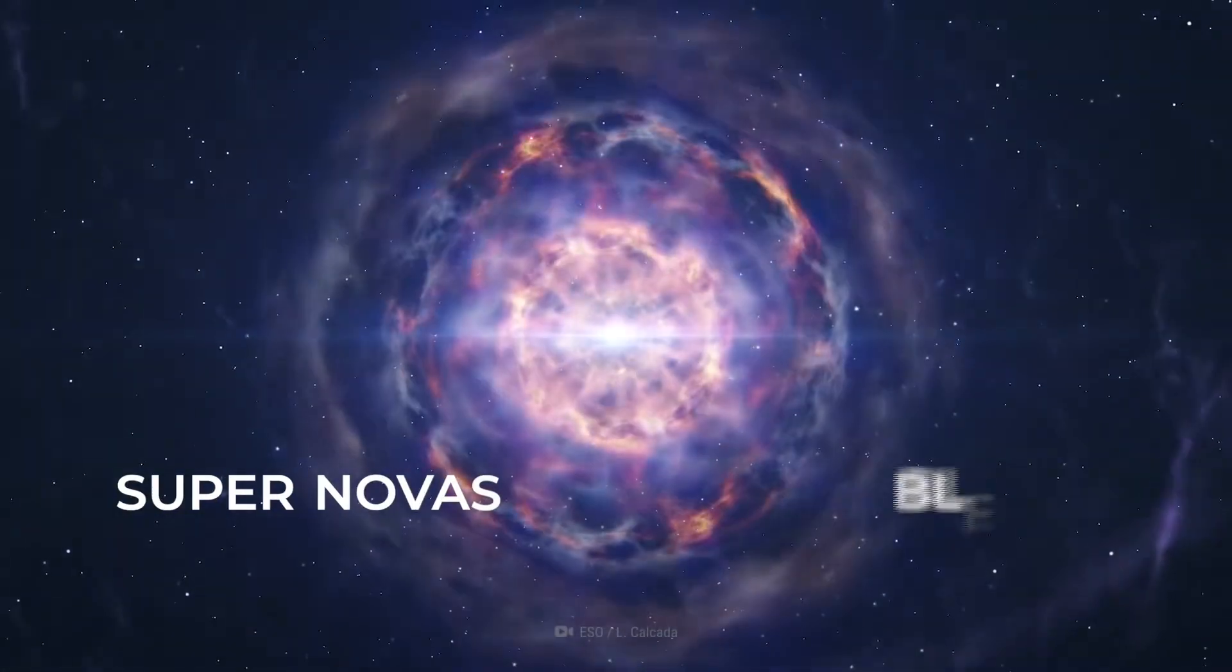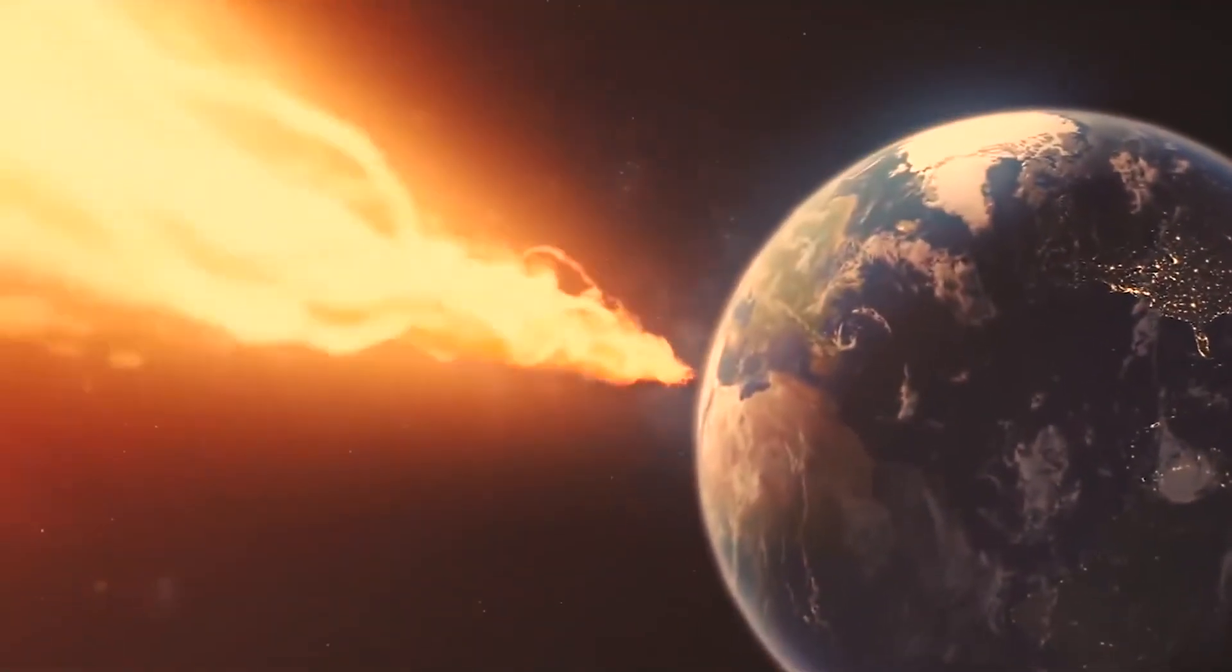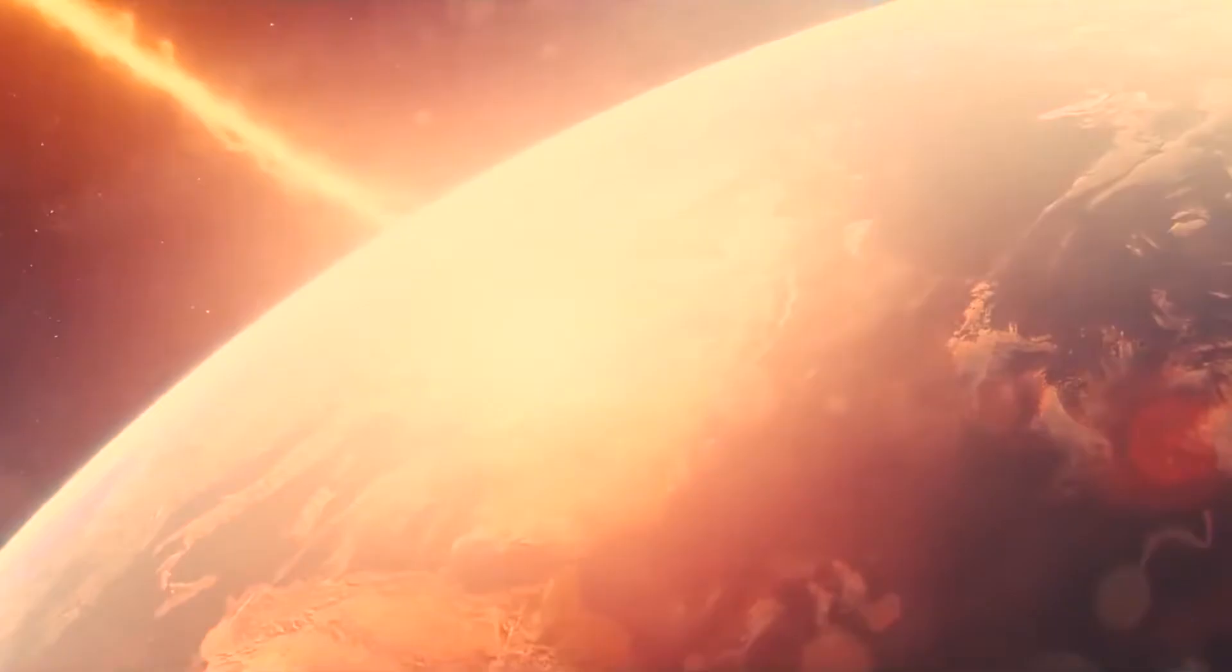They include supernovas, black holes, and a few other theoretical sources. When a star goes supernova, it generates a large blast of energy that is emitted as a Gamma Ray Burst that spreads out from the star into space. Once the bursts are into space, they will travel at the speed of light until they run into something.